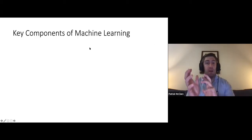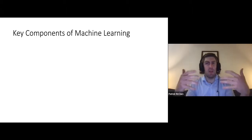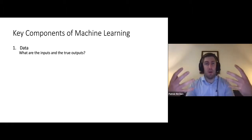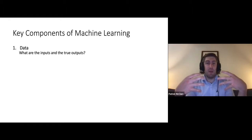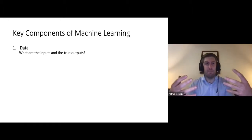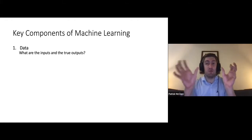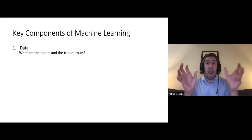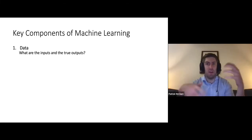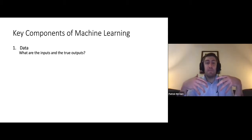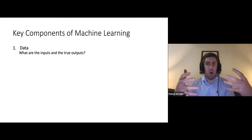To start off, in part one we are going to be talking about the key components of machine learning, particularly in the context of linear models. The first component — and really one of the biggest components of machine learning — is your data. Often, what we can view data as is a set of inputs and true outputs that correspond to those inputs. Those inputs and outputs can be very different depending on the data and the sort of problem you're trying to solve.